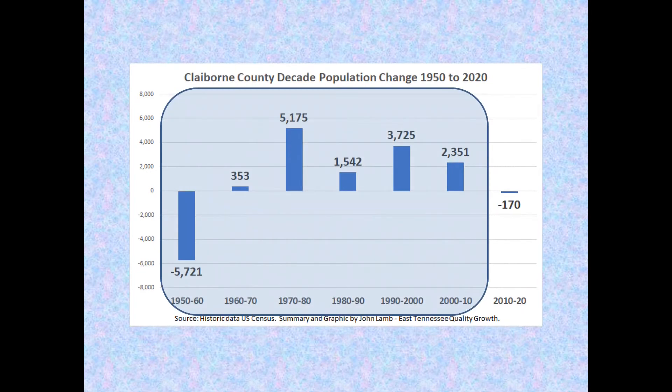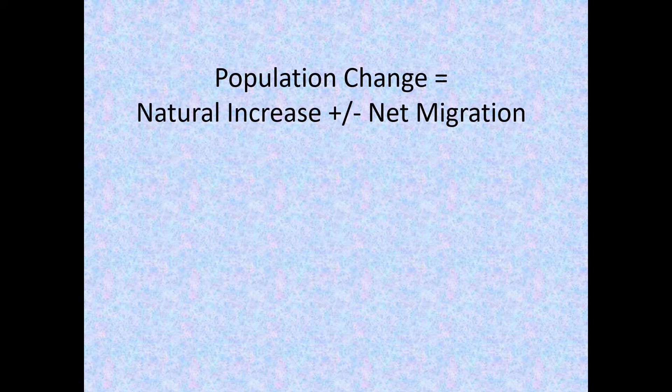We will focus initially on dynamics of growth and change from 1950 to 2010 using a consistent series of supporting data, and fill in 2010 to 2020 later with new census population estimates. The basic components of population growth or change were natural increase and net migration.